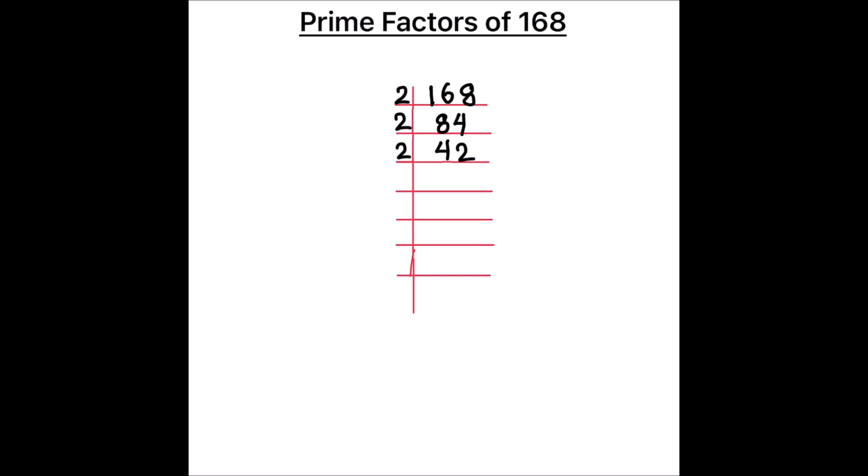42 is also divisible by 2. 2 times 2 is 4 and 2 times 1 is 2, giving us 21. Now 21 is an odd number, so it is divisible by the next prime number 3. 3 times 7 is 21, and 7 is a prime number.